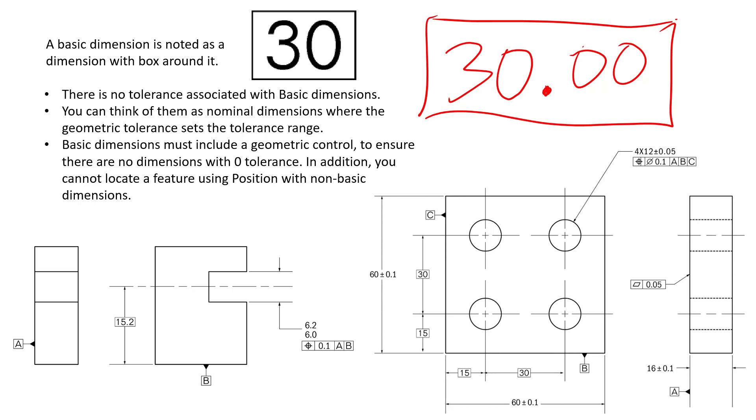The next bullet says you can think of them as nominal dimensions where the geometric tolerance sets the tolerance range. A lot of times we do call them a nominal dimension. Looking at this first little sample drawing down here in the lower left, we have this position tolerance, we have a slot width from 6.0 to 6.2, and then position tolerance of 0.1 back to A and B.